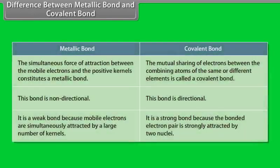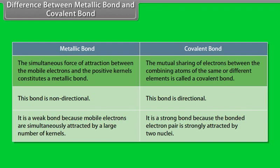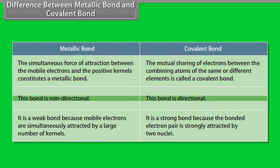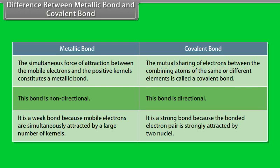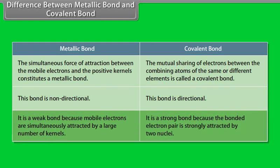Difference between metallic bond and covalent bond: The simultaneous force of attraction between mobile electrons and positive kernels constitutes a metallic bond, whereas mutual sharing of electrons between combining atoms is called a covalent bond. Metallic bond is non-directional, whereas covalent bond is directional. Metallic bond is a weak bond because mobile electrons are simultaneously attracted by a large number of kernels, whereas covalent bond is strong because the bonded electron pair is strongly attracted by two nuclei.